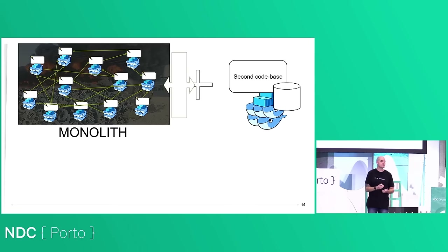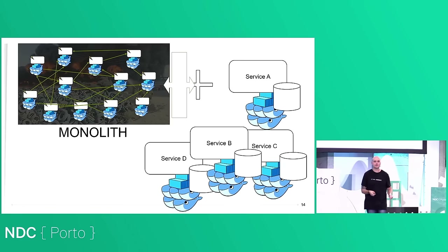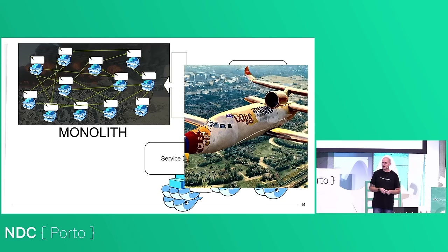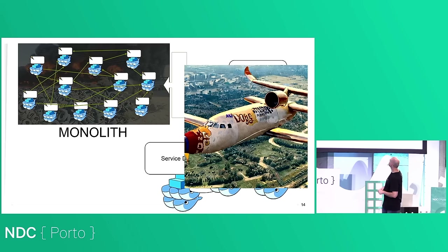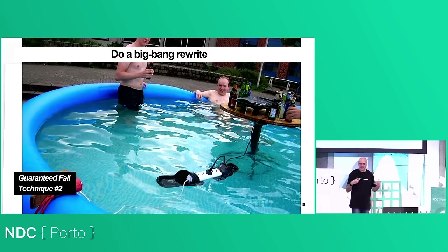You honestly believe this because you've invested 10 months trying to do this rewrite. But now you don't just have one system to support — you've got three: your old legacy system, your new system, and this horrible integration layer. The integration layer is going to be horrible because it has to talk to the horrible old system, and the longer it does that, the more likely the horrible decisions in the old system bleed over into the new system. So the second technique to make the worst system is: try and do a big bang rewrite.